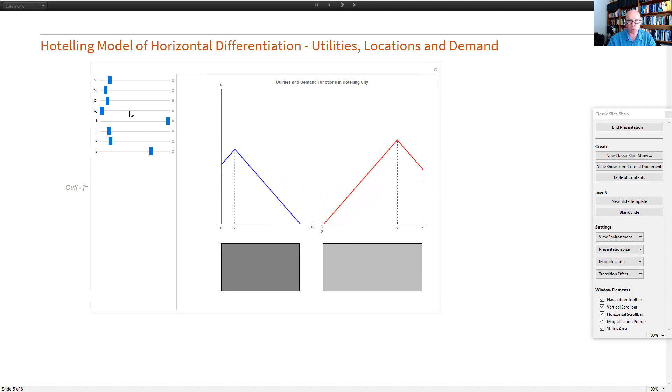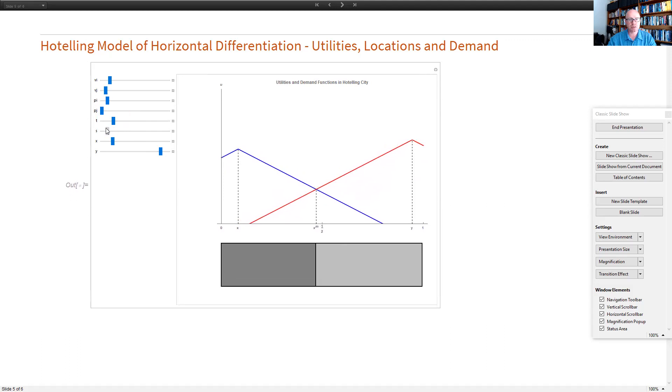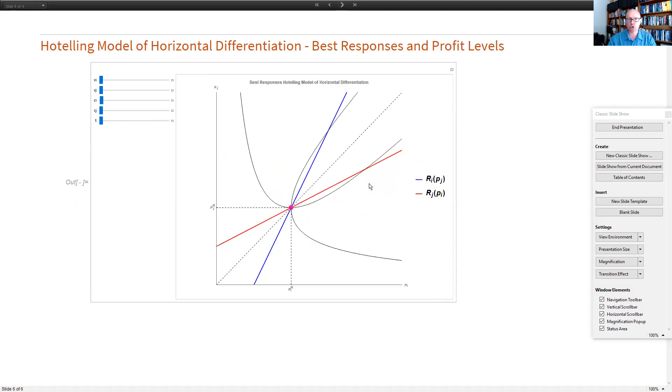And I can also show what happens if we change the locations of the two firms, or indeed, if we were to change the density of the consumers in the market, and you can see how that changes here. So these are basically the standard setup of the Hotelling model, and then I can also show what happens in terms of best response functions. Again, we can show what happens if you have vertical differentiation, as well as horizontal differentiation. We get asymmetric outcomes. I can change the costs of the two firms. Again, we move away from the 45-degree line because we have asymmetric costs. And then I can also show what happens if we change the transport costs in this setting. Okay, so this is just a very quick run-through of the different possibilities we can look at.